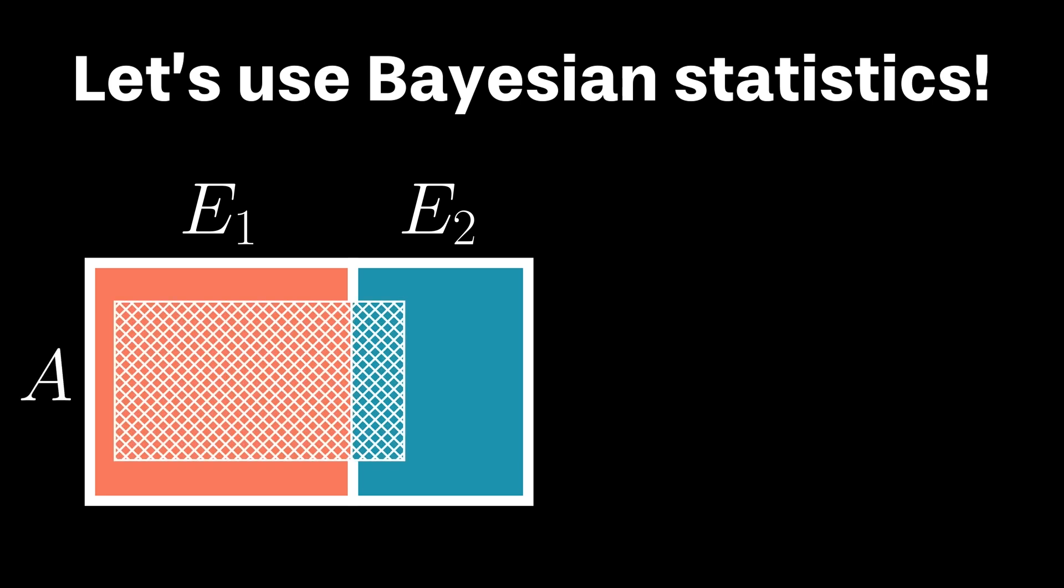We also know that we've observed the sun two days in a row, which I'll refer to as A, and notice that A overlaps with both E1 and E2. This means that there is some probability you would have observed two sunny days in a row with model E1 as well as E2.